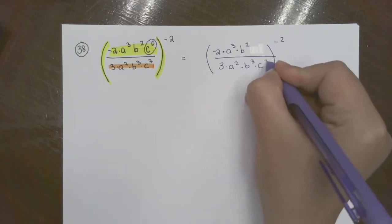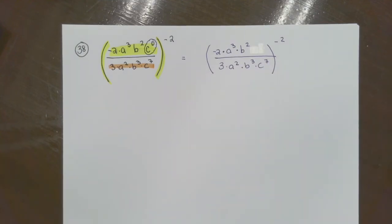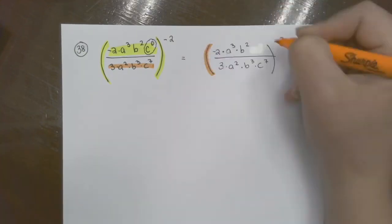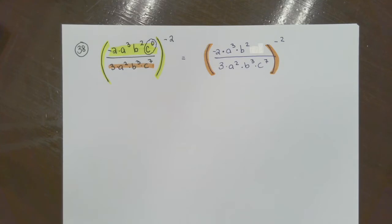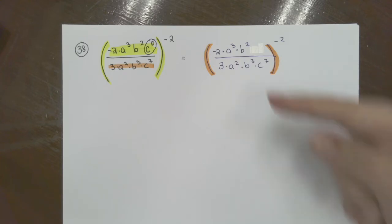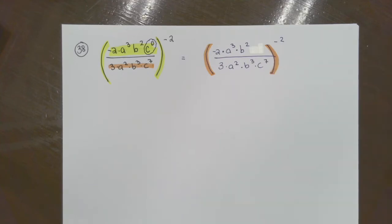The top part's done. Now let's go into the bottom part. Anything to simplify there? I hear no. Three, a squared, b, no. You've got all random letters. Nope. Okay.